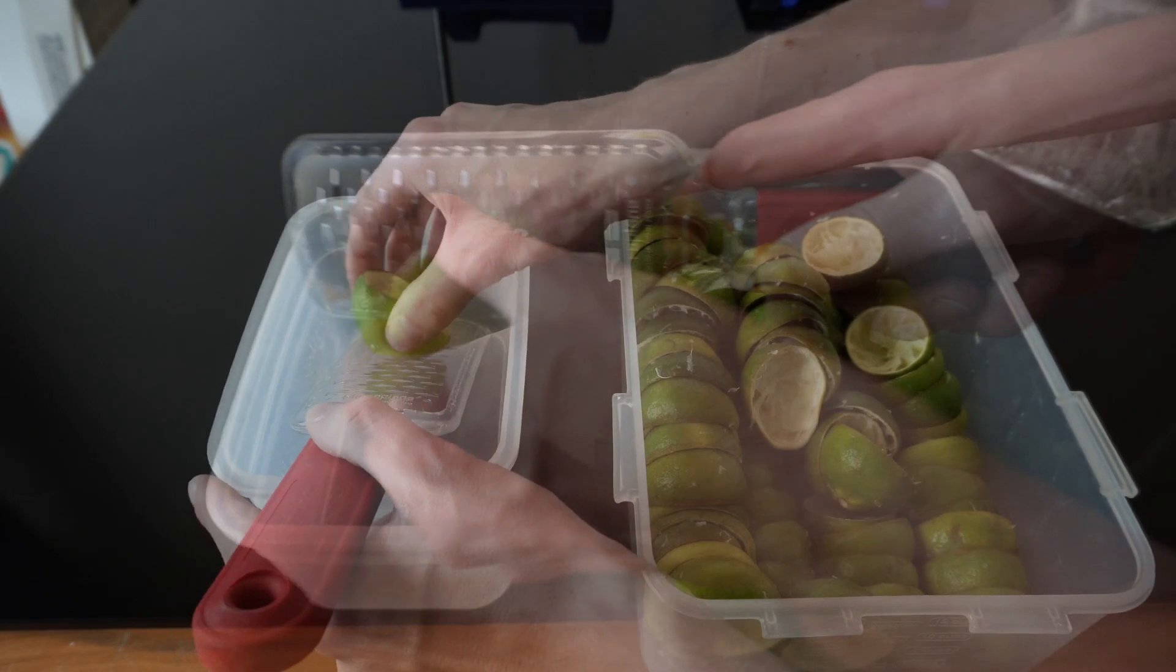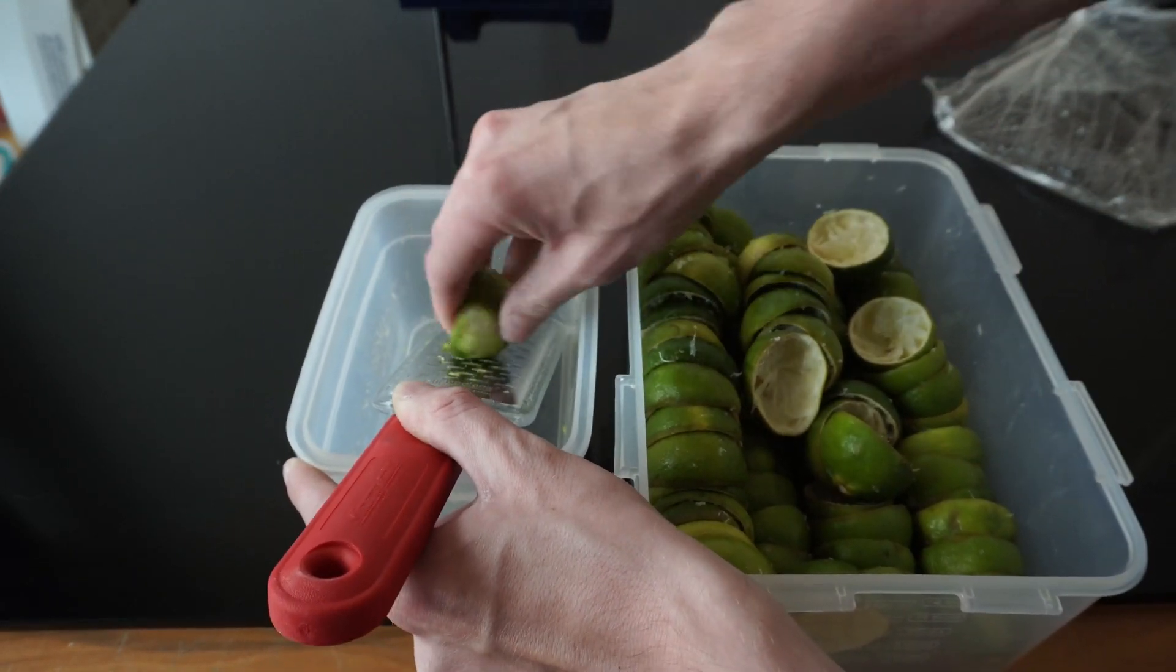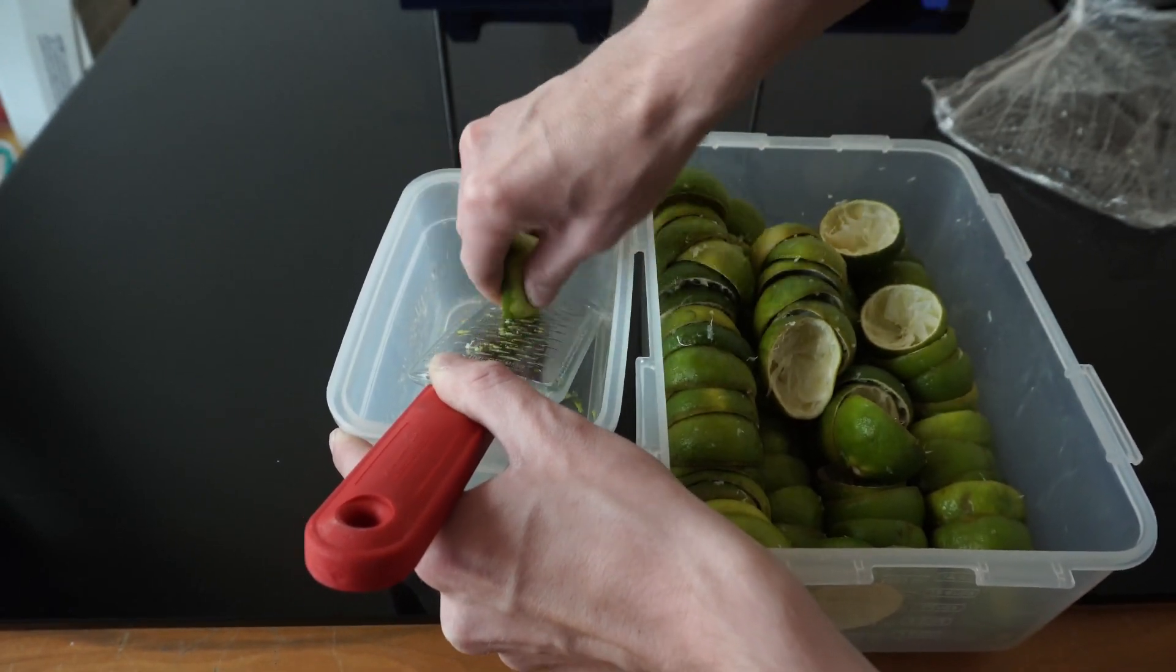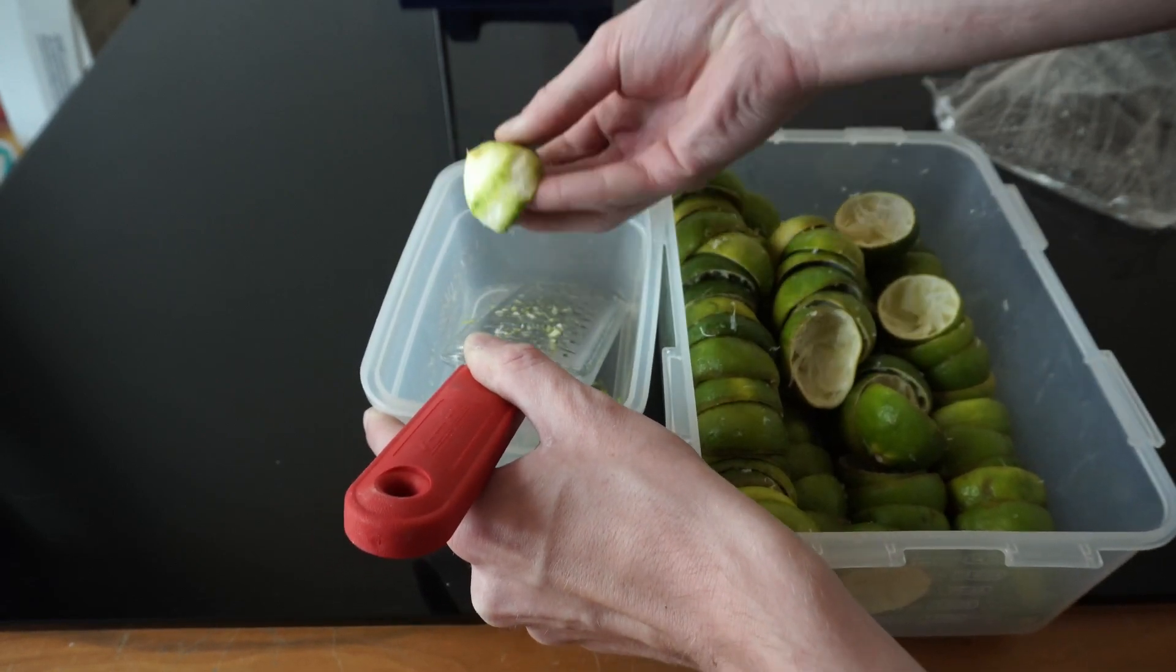We are going to be focusing on the part of the lime that contains the most limonene, which is the rind, or the skin of the lime. Even though there is limonene throughout the fruit, the most concentrated part is the skin, so that's what I'll focus on.